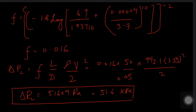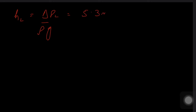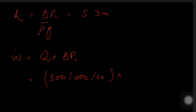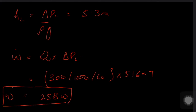Now we calculate the head loss: h_L = ΔP_L / (ρg) = 5.3 meters. Finally, the pumping power is W_dot = Q × ΔP_L = (300/1000/60) × 51,609 ≈ 258 watts. That is the answer for Example 1.